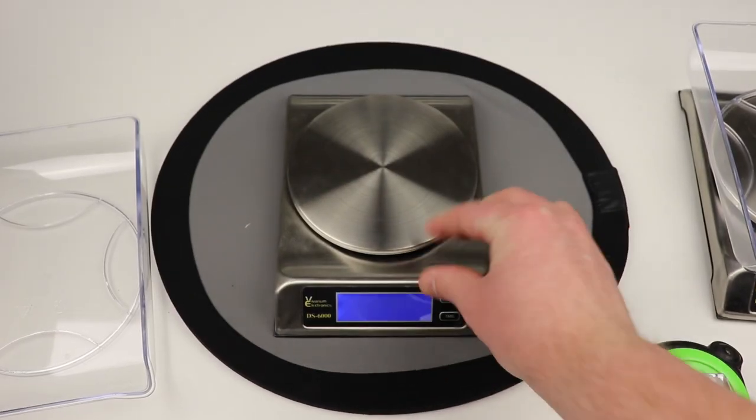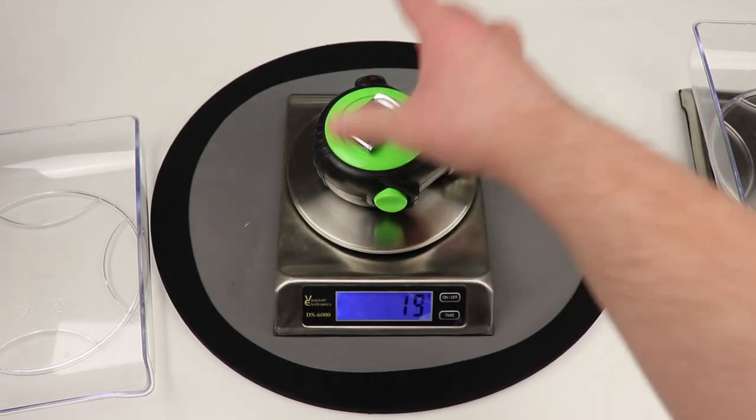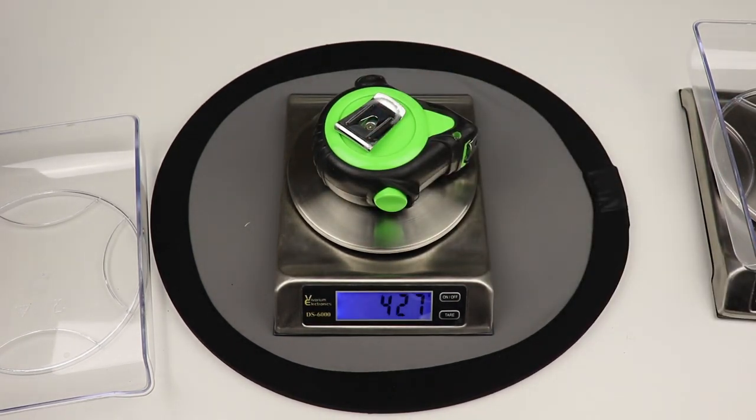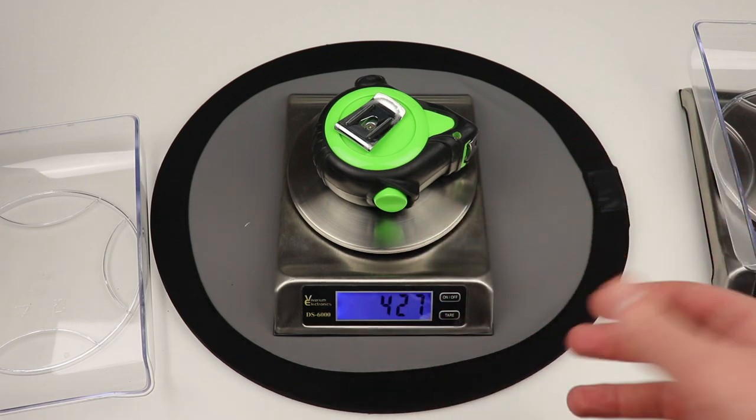We're going to take the plate off, turn our scale on, I'm going to put the tape measure on the scale just like this. So in this case I'm getting right around what I would think, so 427 grams, which for something like this is going to be within the accurate range.